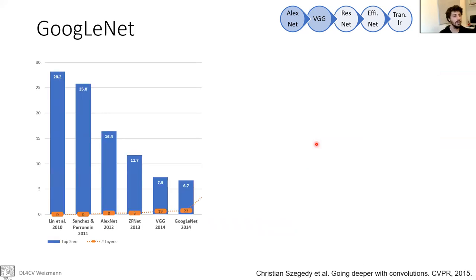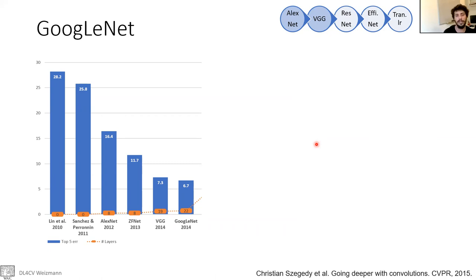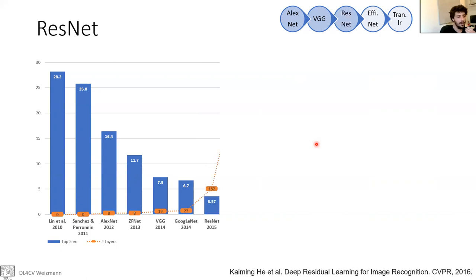The actual winner of the 2014 challenge was GoogLeNet, which has some interesting insights about efficiency of networks. We don't have time to go through it today, but there's plenty of information about it online — it has 22 layers and achieved a 6.7% error rate. Our next architecture is ResNet, which was the first to introduce really deep networks.